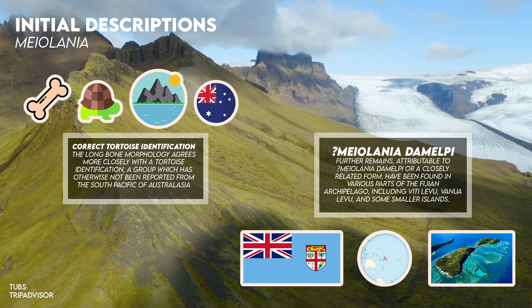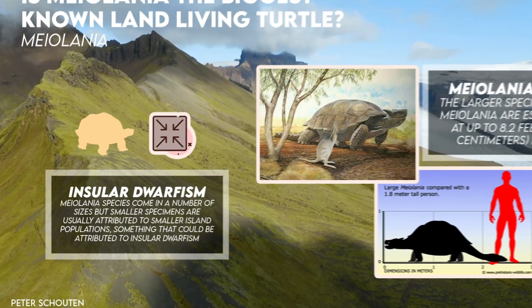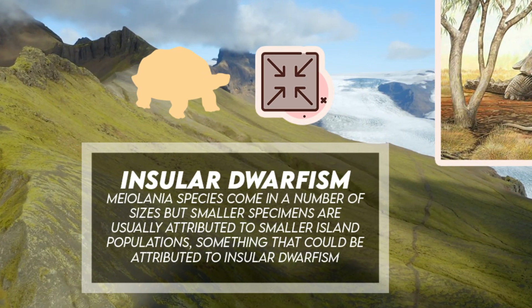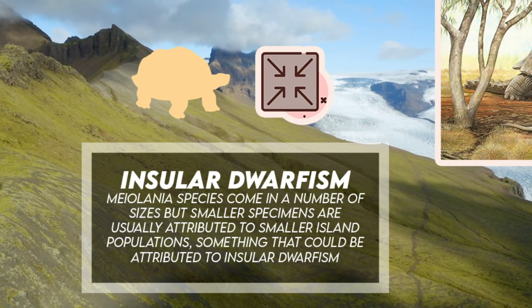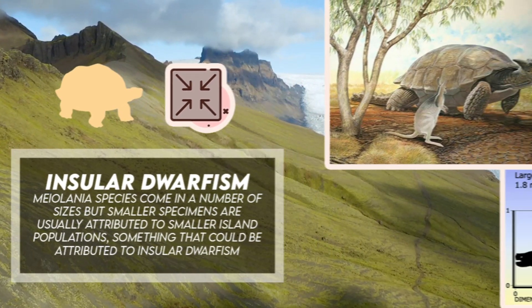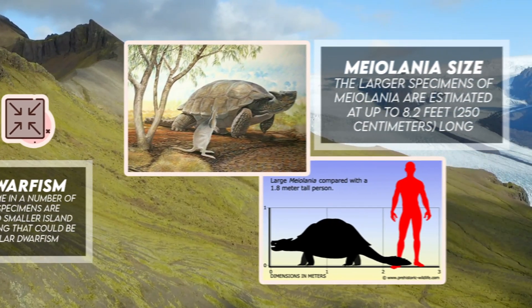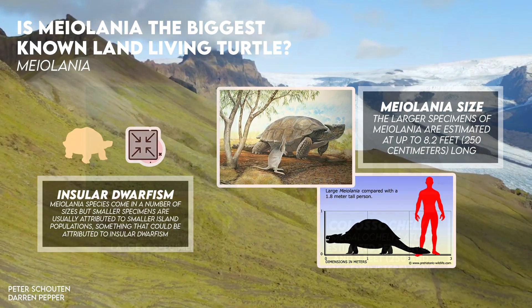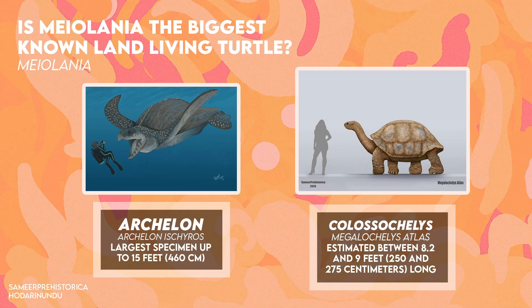Myolania species come in a number of sizes, but smaller specimens are usually attributed to smaller island populations, something that could be attributed to insular dwarfism. The larger specimens of Myolania are estimated at up to 8.2 feet or 250 centimeters long. Despite the fact that some aquatic turtles like Archelon were bigger, Myolania is the second biggest known land-living turtle. Its only real rival in terms of size is the giant Colossochelys from Asia, estimated between 8.2 and 9 feet, or 250 and 275 centimeters long.